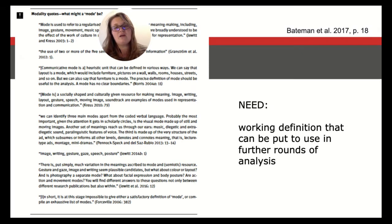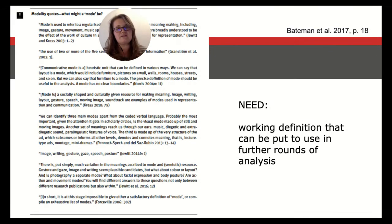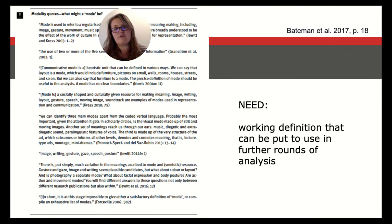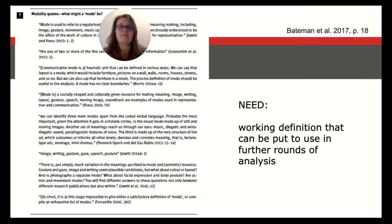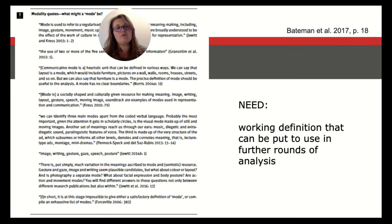Chapter 1 of the textbook gives an overview of some of the most prominent definitions of semiotic modes. Some definitions share that modes should always involve the perceptual senses, but with this it's difficult to describe gesture, speech, or writing also as modes. Other definitions simply list various expressive forms that contribute to a meaning-making situation without further explanation, making it unclear what one can do with them analytically. What we need instead is a working definition that can be put to use in actual analysis.